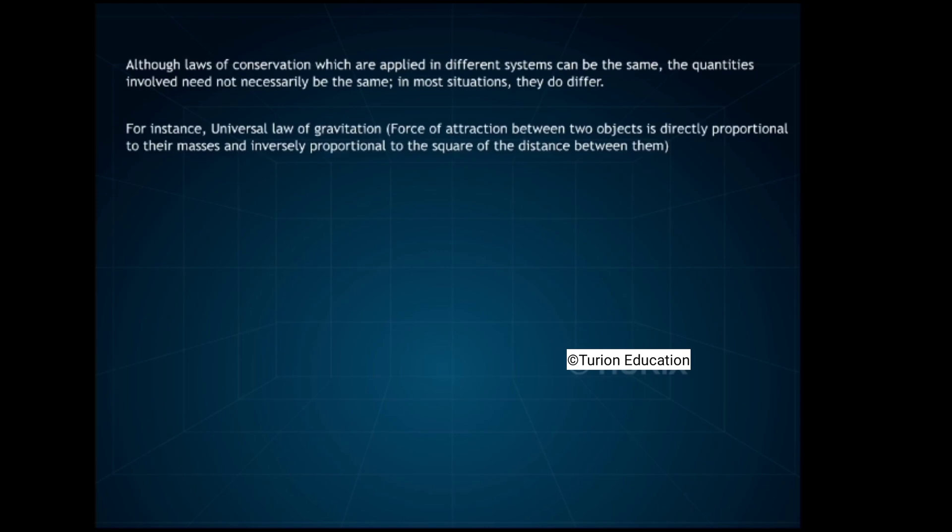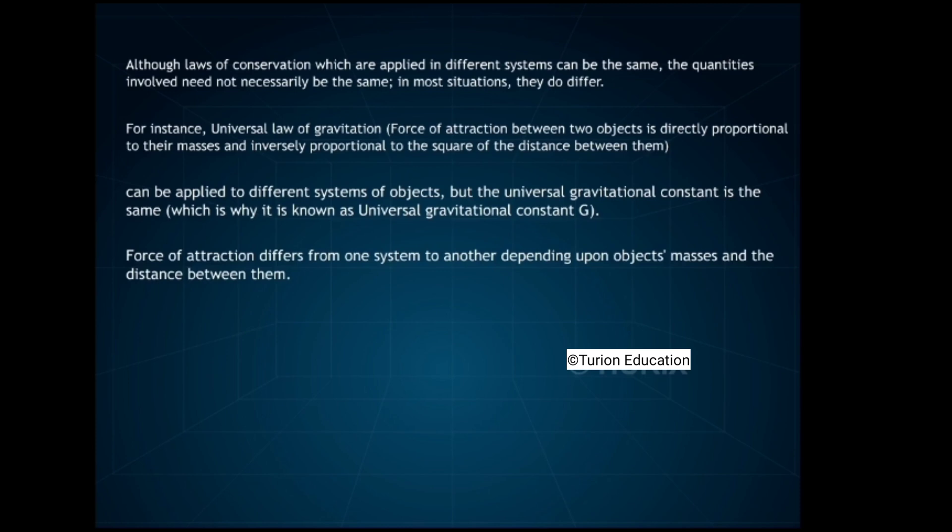For instance, universal law of gravitation, force of attraction between two objects, is directly proportional to their masses, and inversely proportional to the square of the distance between them. Can be applied to different systems of objects, but the universal gravitational constant is the same, which is why it is known as universal gravitational constant g. Force of attraction differs from one system to another, depending upon objects' masses and the distance between them. For example, g-force on the earth is 9.8 meters per second square, whereas on the moon it is only one-sixth of this value.